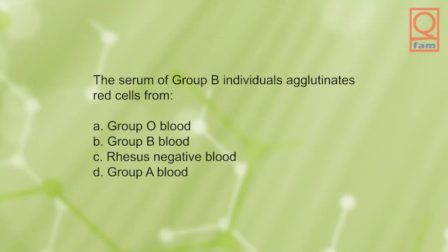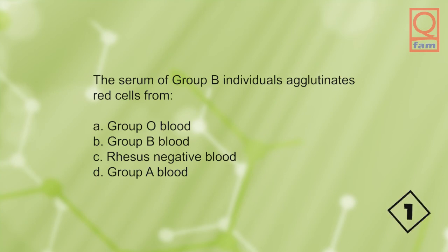The serum of group B individuals agglutinates red cells from: A) group O blood, B) group B blood, C) rhesus negative blood, D) group A blood. The answer is D, group A blood.